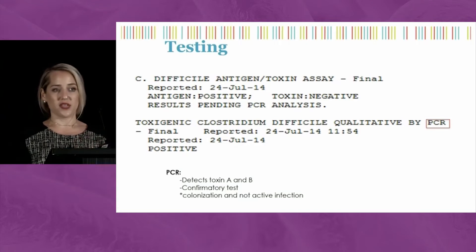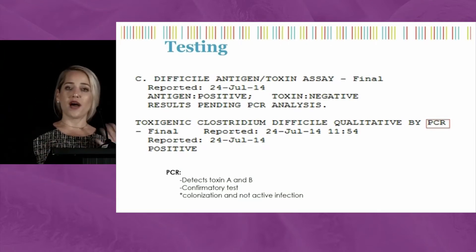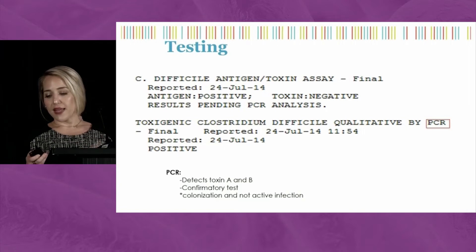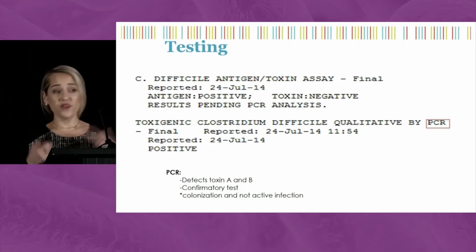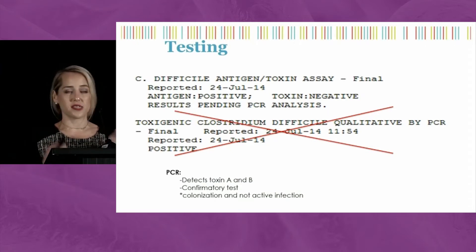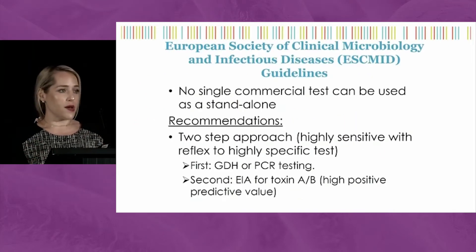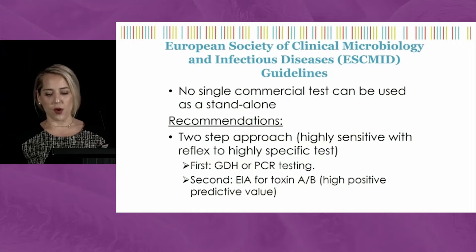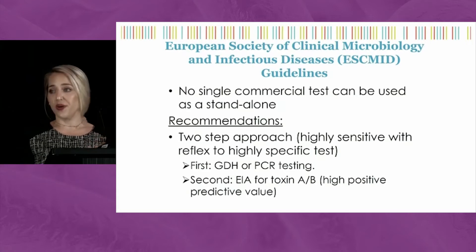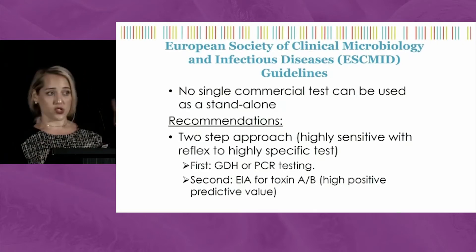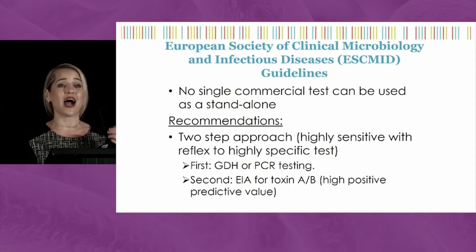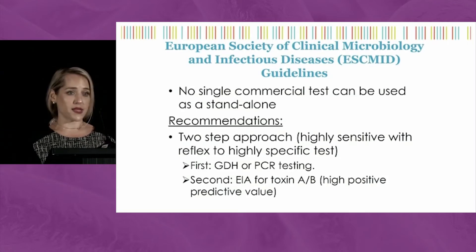If you only have a PCR result in front of you, you can't really tell the difference between colonization and actual infection—you have to combine the clinical information with the test result to make a decision. At my institution, we've eliminated PCR testing and are only doing GDH reflex to EIA. This is now supported by guidelines; the ESCMID guidelines recommended that a single test probably isn't good enough and that a minimum two-step testing approach should be used.